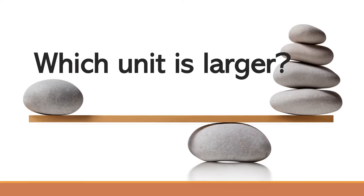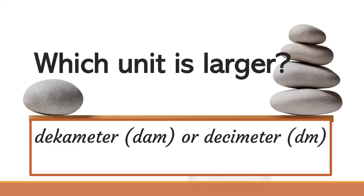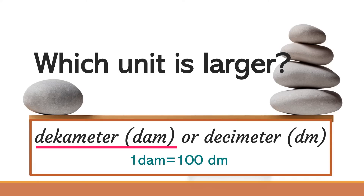Now let us try to identify which unit is larger. First, is it kilometer or mile? The answer is mile, since one mile is approximately 1.61 kilometers. Next, is it decameter or decimeter? The answer is decameter, since one decameter is equal to 100 decimeters.